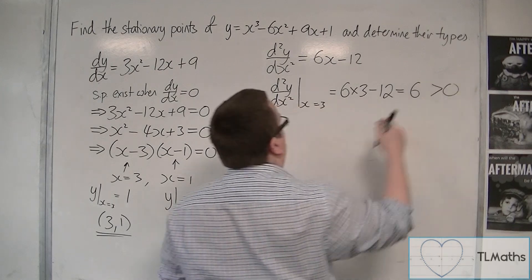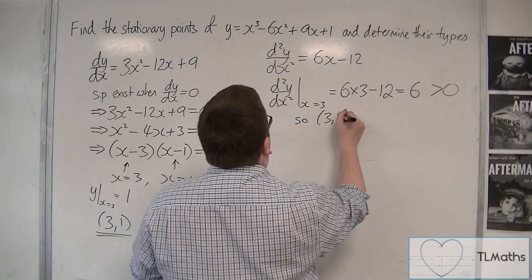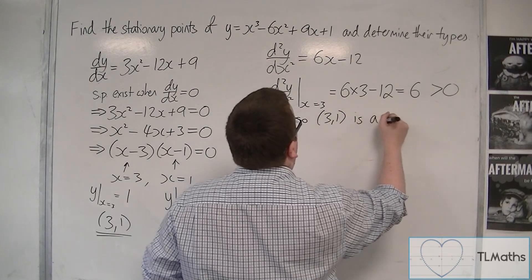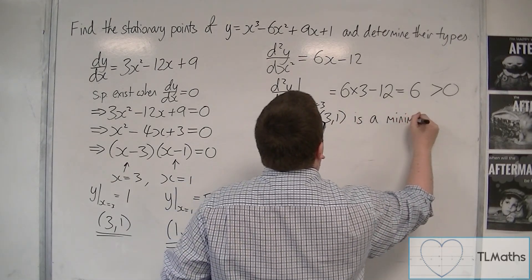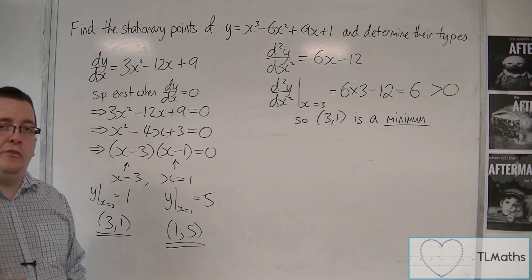6 is positive, is greater than 0. So (3, 1) is a minimum, or a local minimum, because the second derivative is positive.